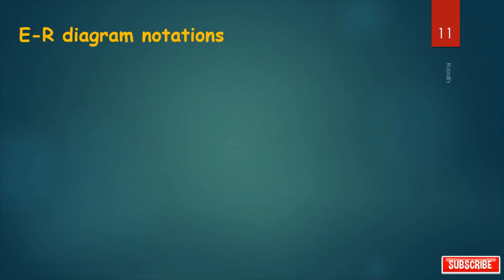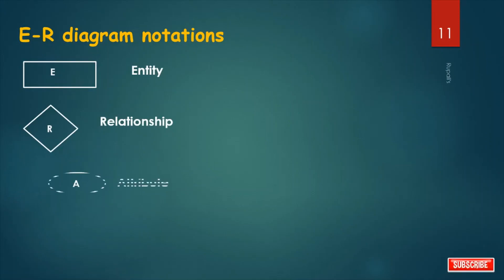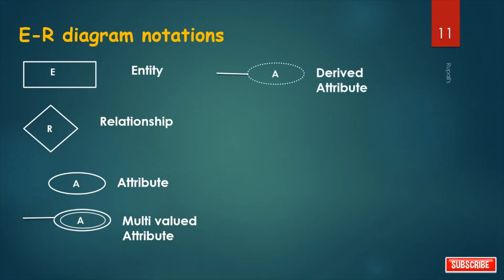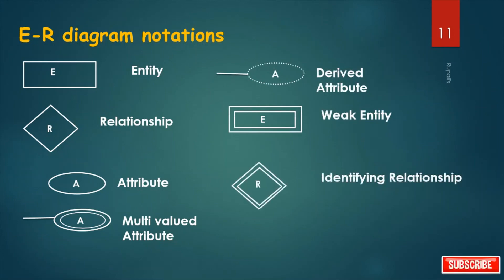ER diagram notations. Rectangle: entity set. Diamond: relationship set. Ellipses: attributes. Double ellipses: multivalued attributes. Dashed ellipses: derived attributes. Double rectangles: weak entity sets. Double diamonds: identifying relationship. Double lines: total participation of an entity in a relationship set.